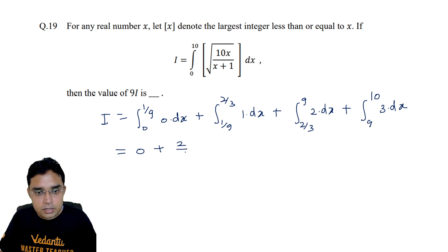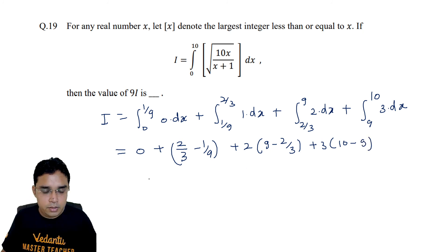So if we calculate it, we get 0 here, we get 2/3 minus 1/9 here, plus 2 times (9 minus 2/3) here, plus 3 times (10 minus 9) here. So this becomes (6 minus 1) 5/9 plus (27 minus 2) times 2, which is 50/3, plus 3.